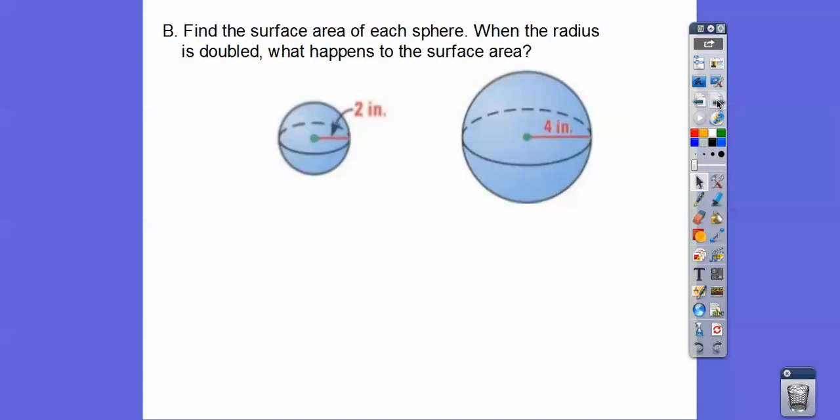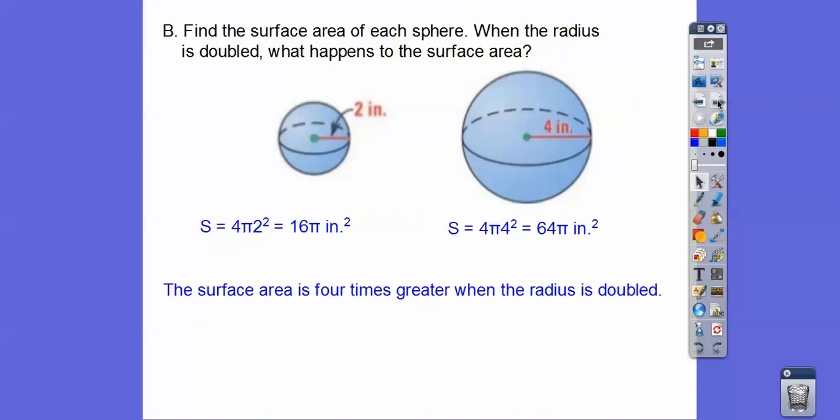So let's find the surface area of each sphere, and then when the radius is doubled, what happens to the surface area? So surface area is 4πr², so 4π times 2². Over here it's going to be 4π times 4². So when we do that, 2² is 4, 4 times 4 is 16, so 16π inches². 4² is 16, 16 times 4 is 64π inches². So the surface area ends up being 4 times greater when the radius is doubled. So it's just 4 times as great.